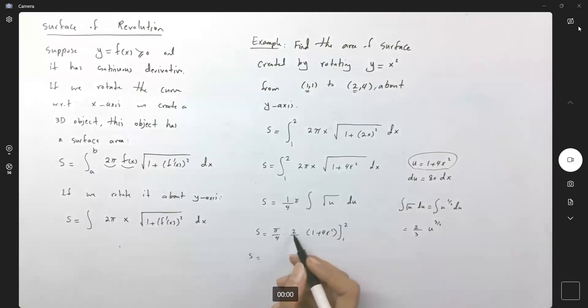So s equals, let us simplify this more, pi over 6. We have (1 plus 4 times 4) raised to three-halves, don't forget the exponent, minus (1 plus 4) raised to three-halves.